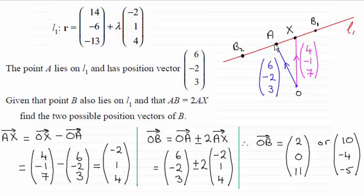But B could be on the other side of A. I've called it B2. So we've got that this length here A to B2 is twice this length AX. So I'm going to find then the position vector of B1 and B2. These are possible positions for B.